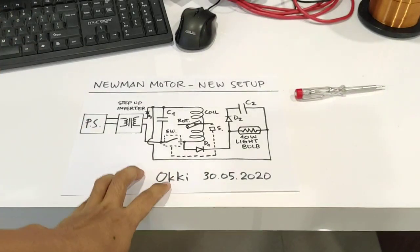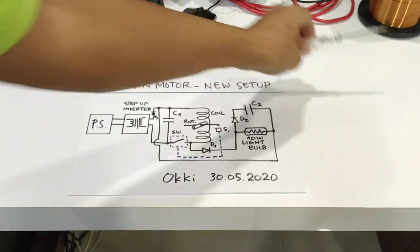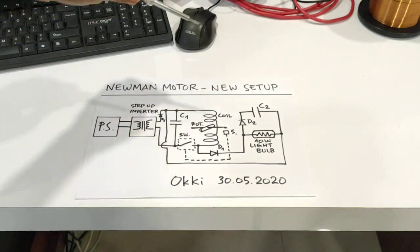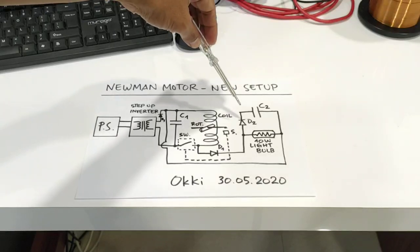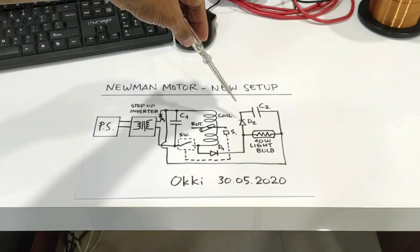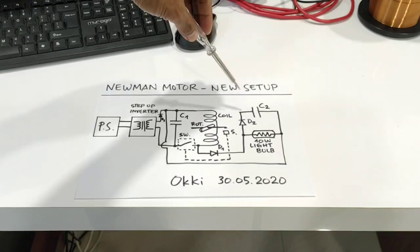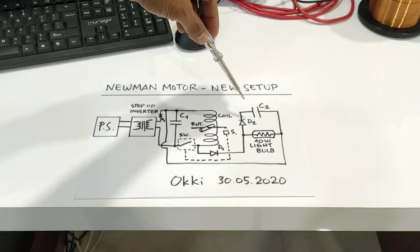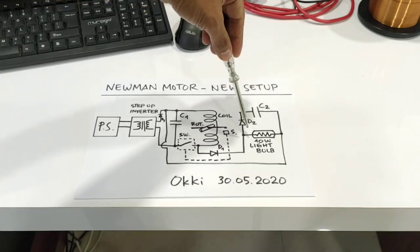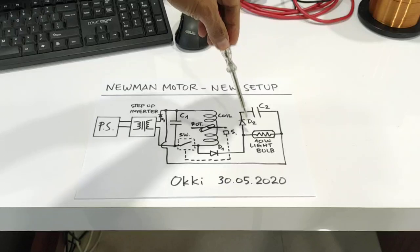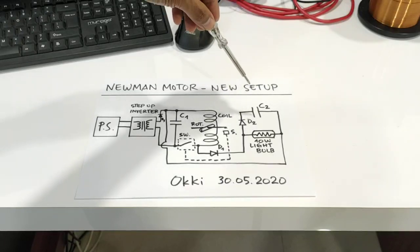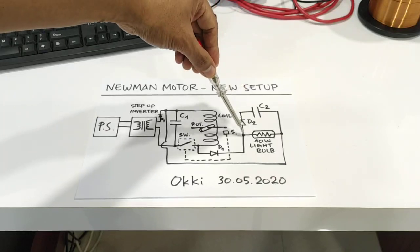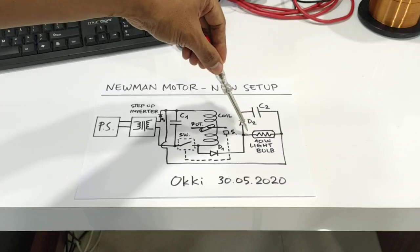This is my schematic from yesterday. For this video I will remove this diode so that we can measure the voltage at the load here, the light bulb. After that I will measure the current that goes to the light bulb.